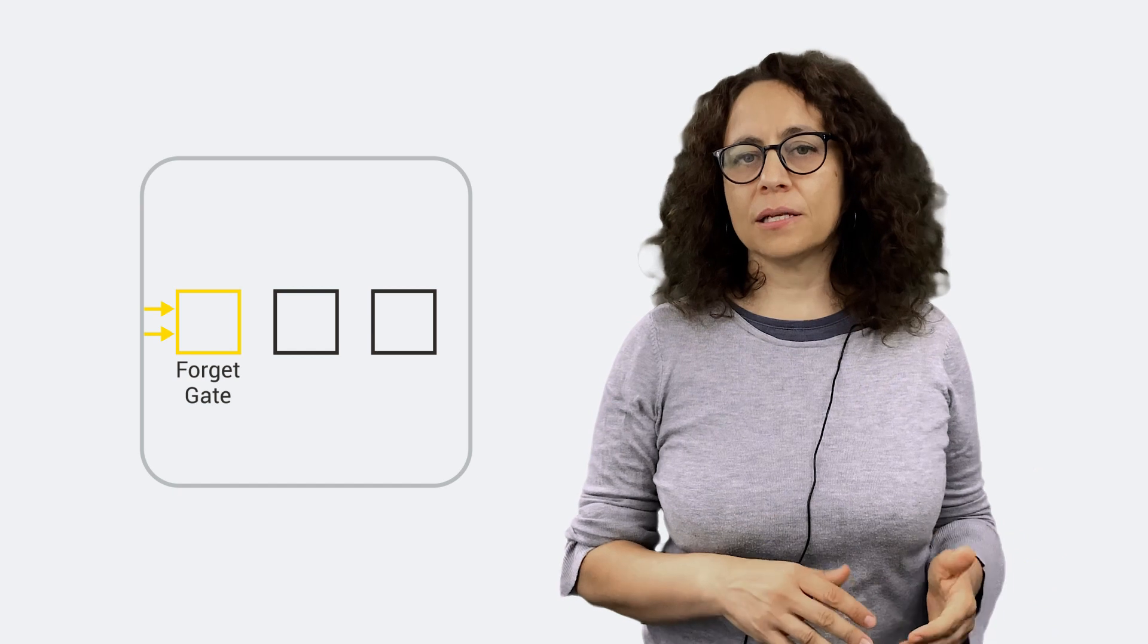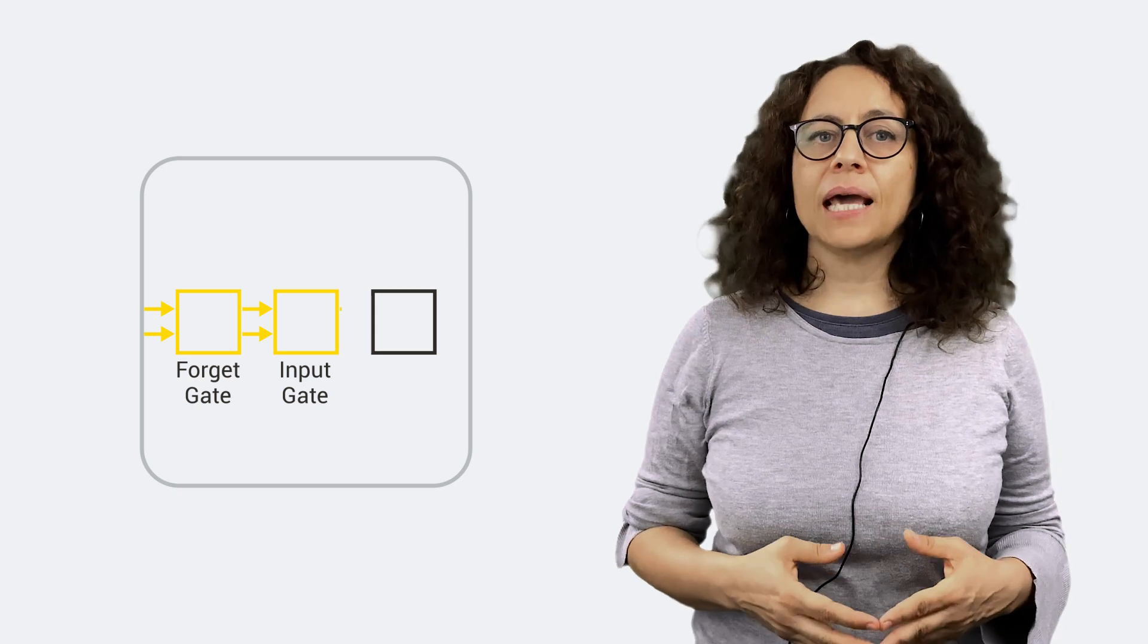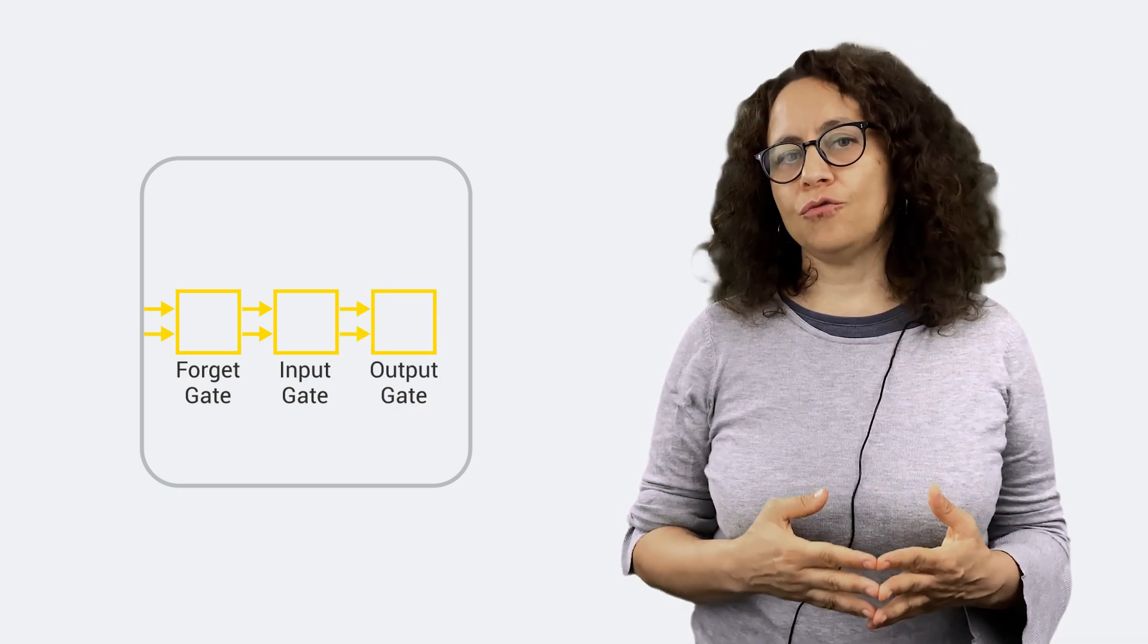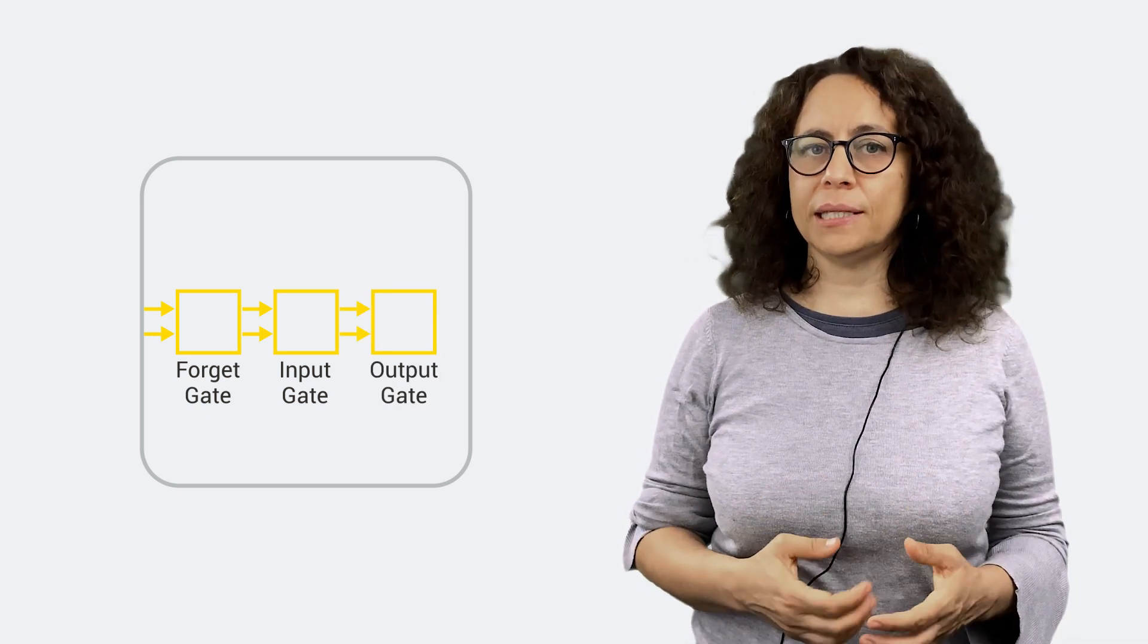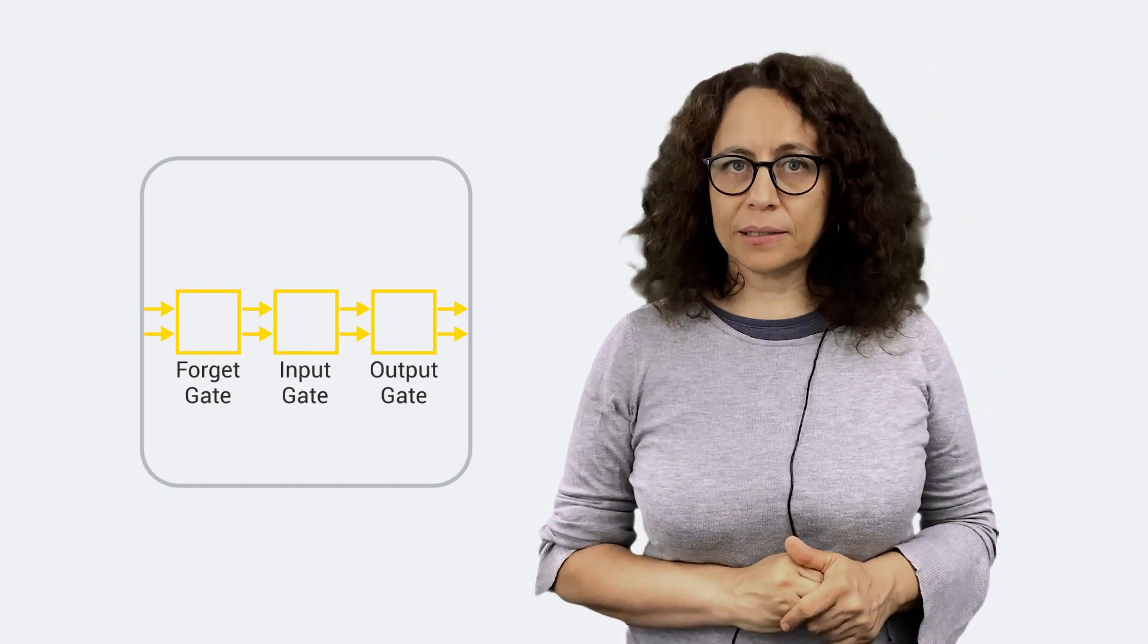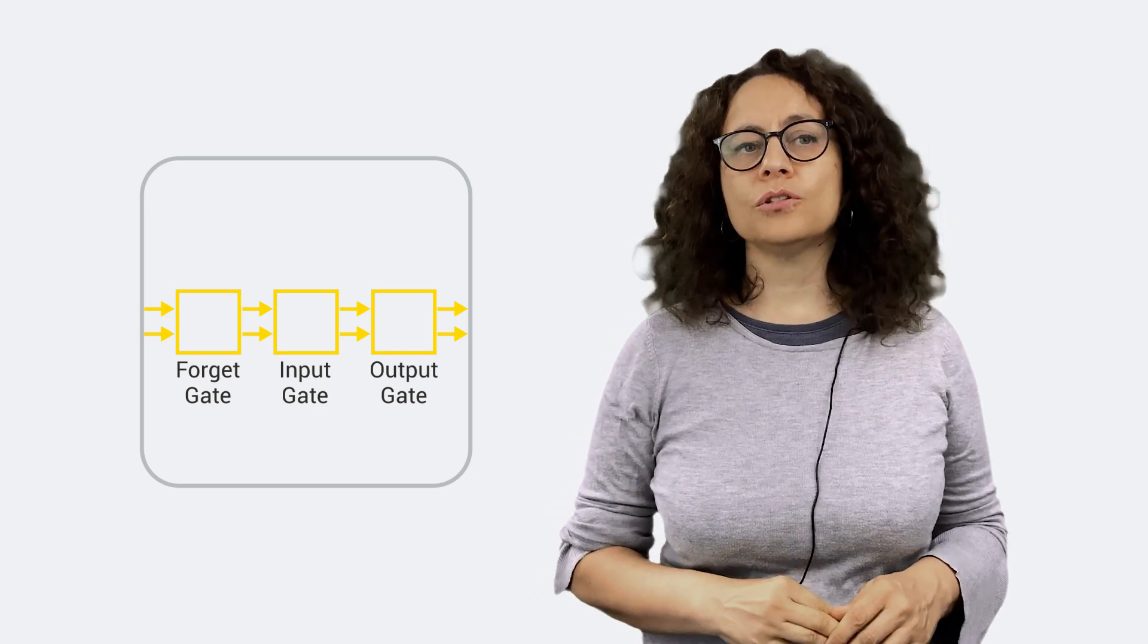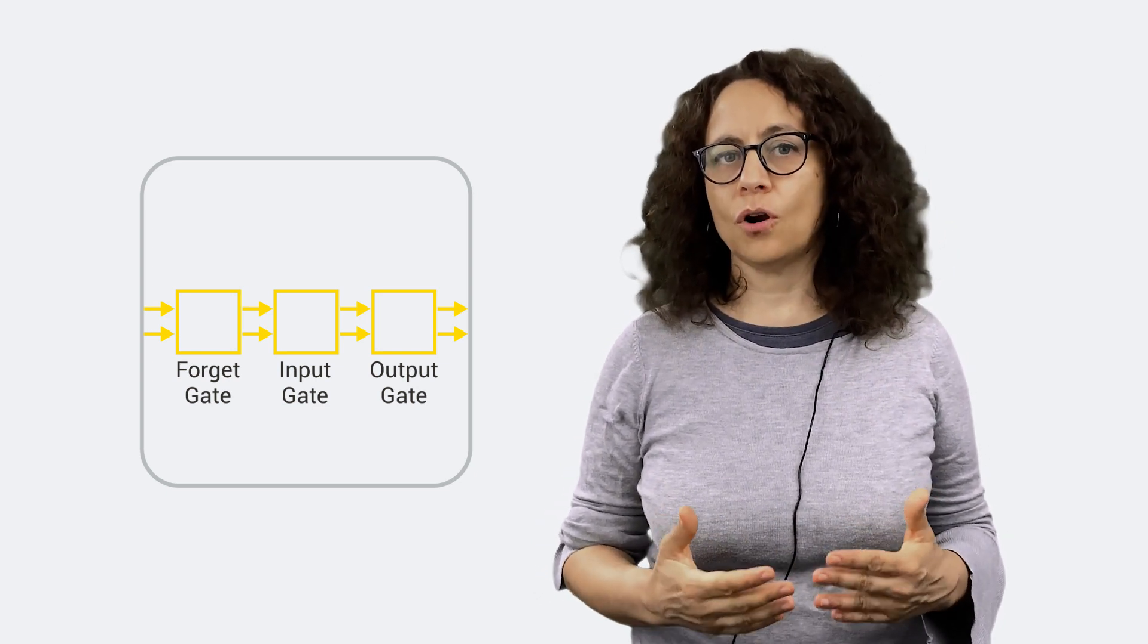The forget gate, the input gate, and the output gate. The forget gate forgets or remembers part of the accumulated memory. The input gate decides which part of the input should become part of the cell states. And the output gate decides which information should be available at the output of the LSTM unit. To the dynamic character introduced by the recurrent connections, LSTM units also add the filtering behavior of the gates.